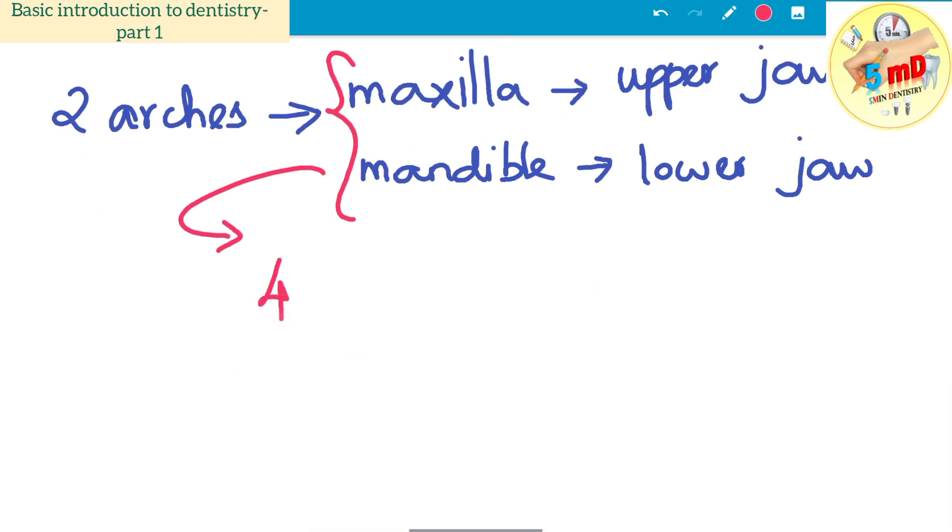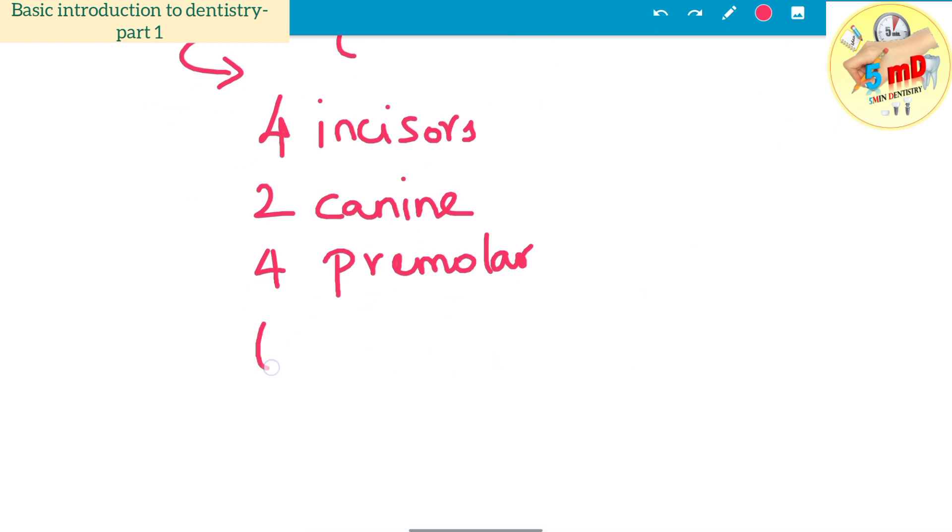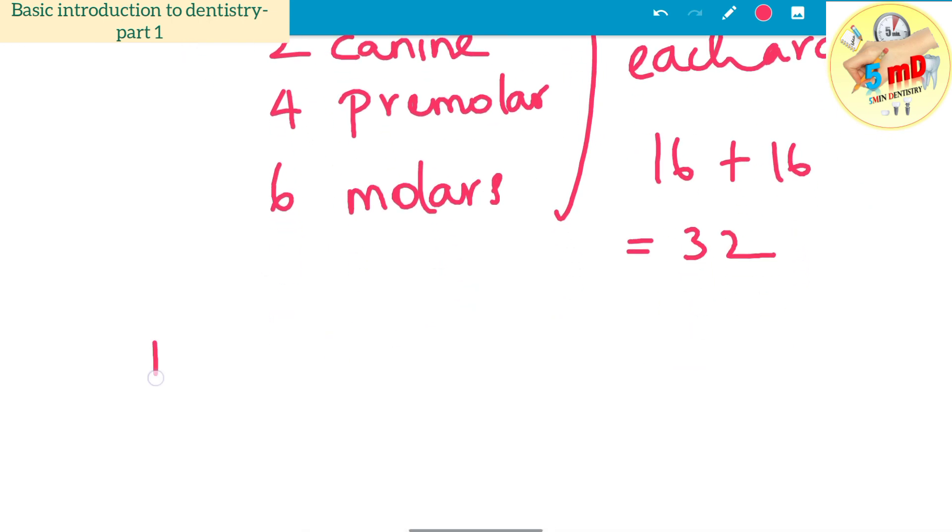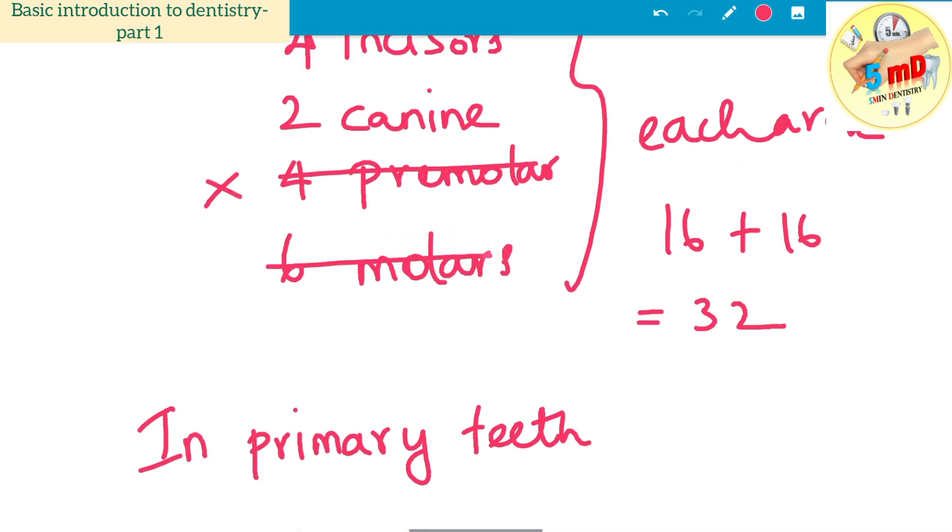Each arch includes four incisors, two canines, four premolars, and six molars—16 per arch, totaling 32 teeth. In kids or primary teeth, the premolars are absent and there are only four molars. The third molars are absent, so there are 10 teeth in each arch, totaling 20 teeth.